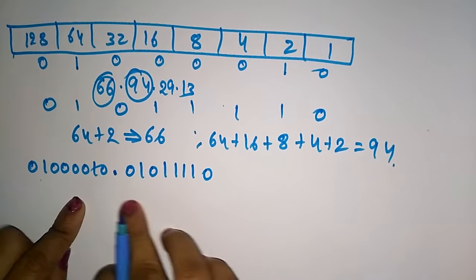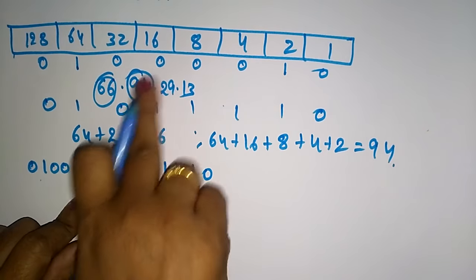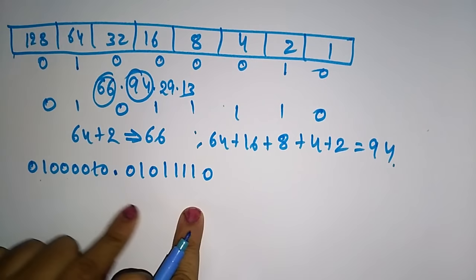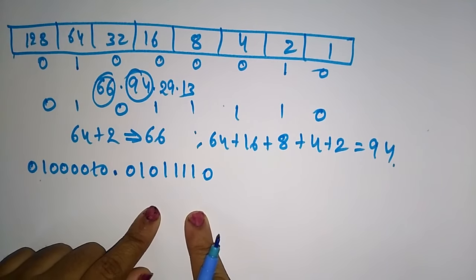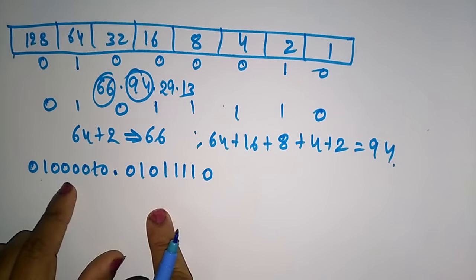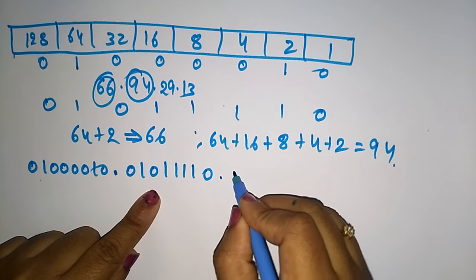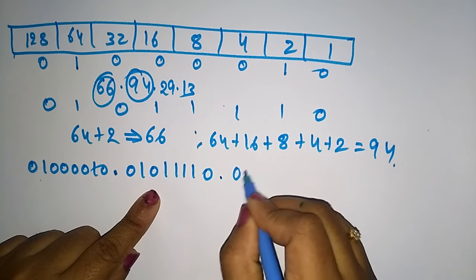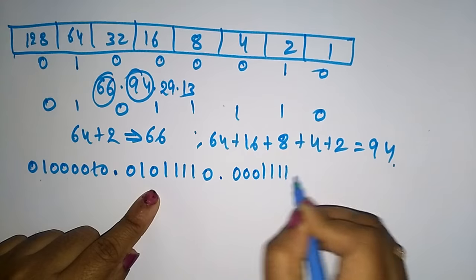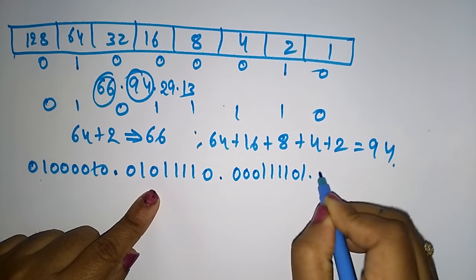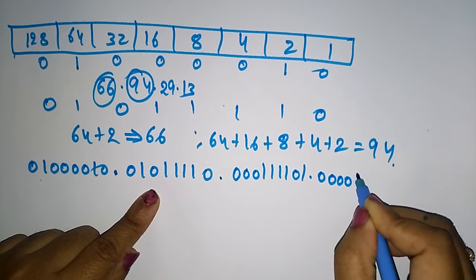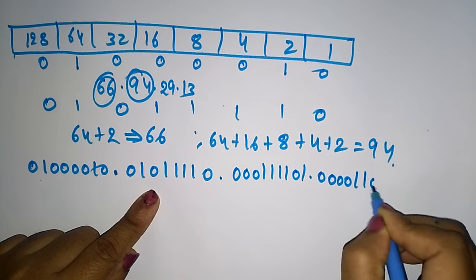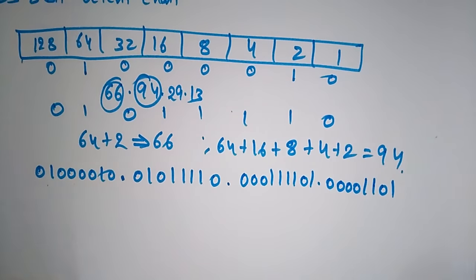In the same way, convert all the decimal numbers into binary. For 29 you get 00011101, and for 13 you get 00001101. This is how the 8-bit octant chart binary conversion works. Thank you.